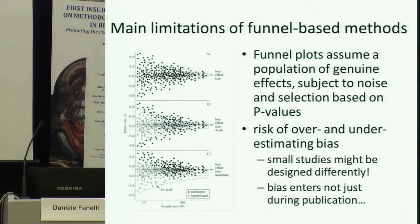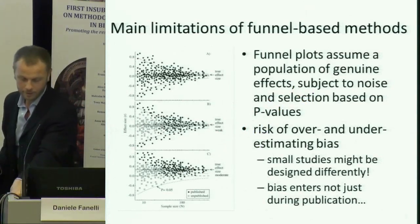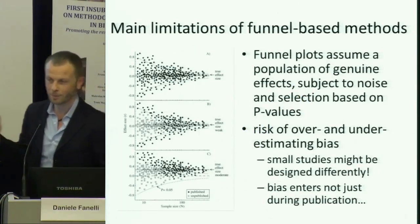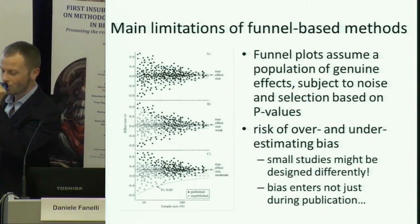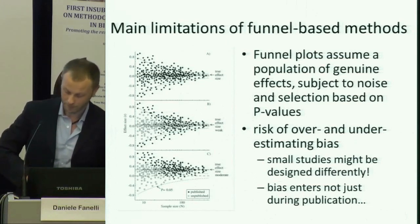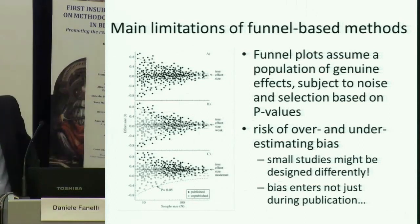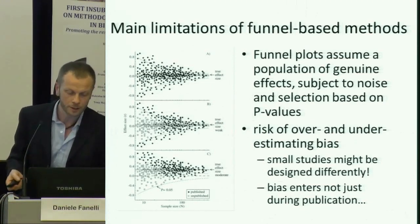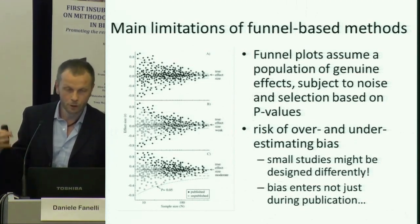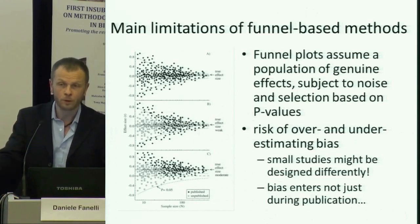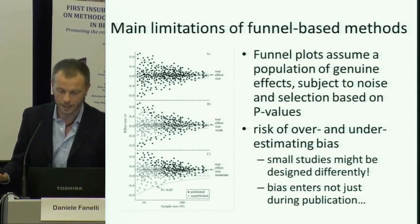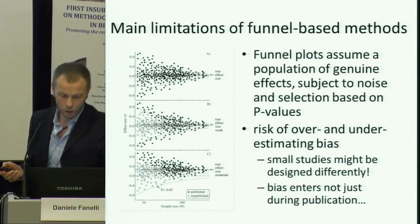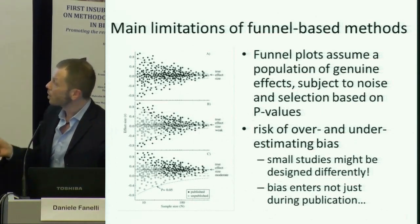Now for the limitations. Most people are not aware of the limitations of these methods and will use this and similar evidence to make points about research integrity, bias in science, and so on. I think we should be very careful about this. The most important limitation, in my opinion, is the very underlying assumption of the funnel plot method, which is that you're facing a population of genuine results which are only subject to sampling error.